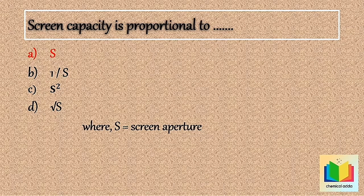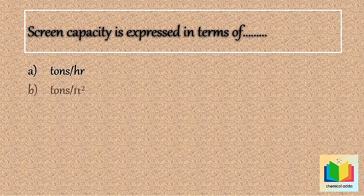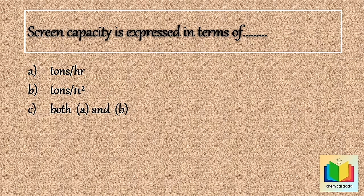Next question: Screen capacity is expressed in terms of — Option A: Tons per hour. Option B: Tons per feet square. Option C: Both A and B. Option D: Tons per hour per feet square.